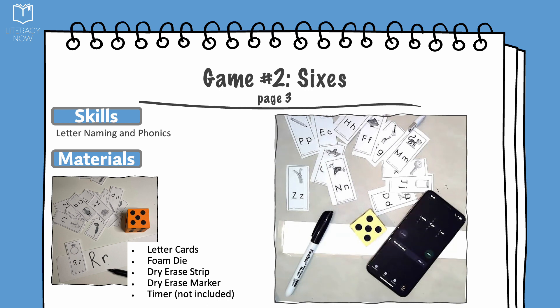Game number 2, Sixes, can be found on page 3 of your activity guide. This game focuses on letter naming, but can be modified to practice other reading skills, such as letter sounds.